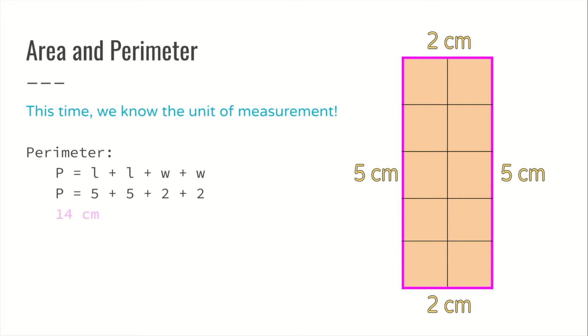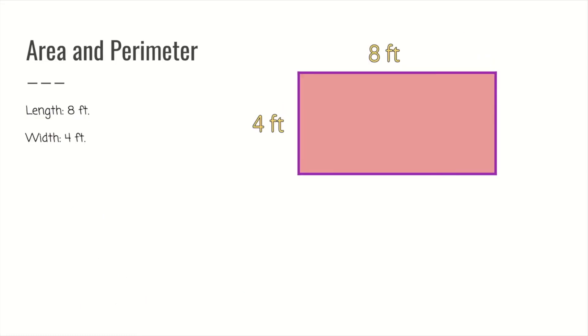The formula for area again is length times width. We must remember that formula. Now we're plugging in our numbers. Area equals 5 times 2. 5 times 2 is 10, so the area for this shape is 10 centimeters square or 10 square centimeters.